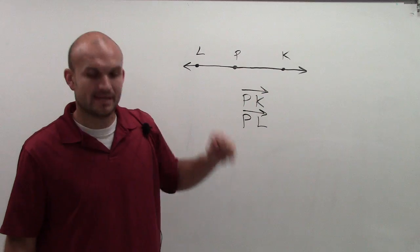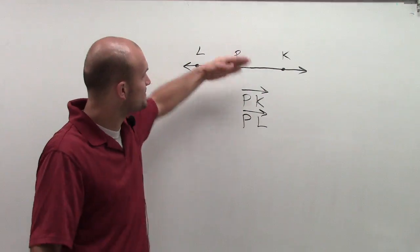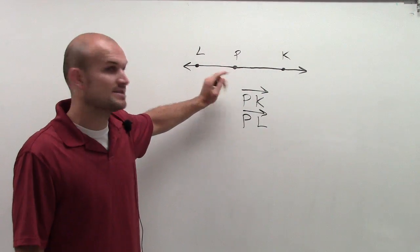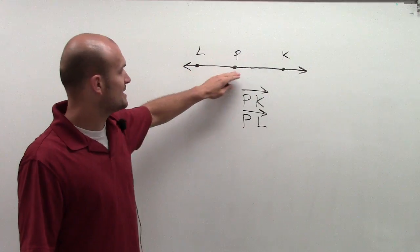is opposite of the ray P, K. And the reason why it's opposite is because it contains the same endpoint but it goes through a point in the opposite direction.